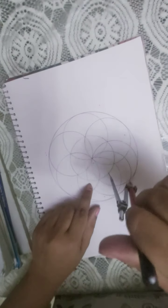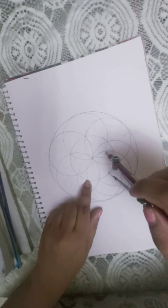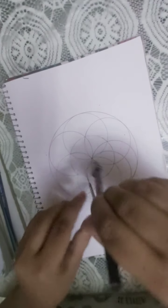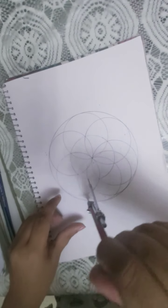And we are going to do the same procedure. Where this new circle and the smaller circle are meeting, we will again put the compass there and we will make another circle.